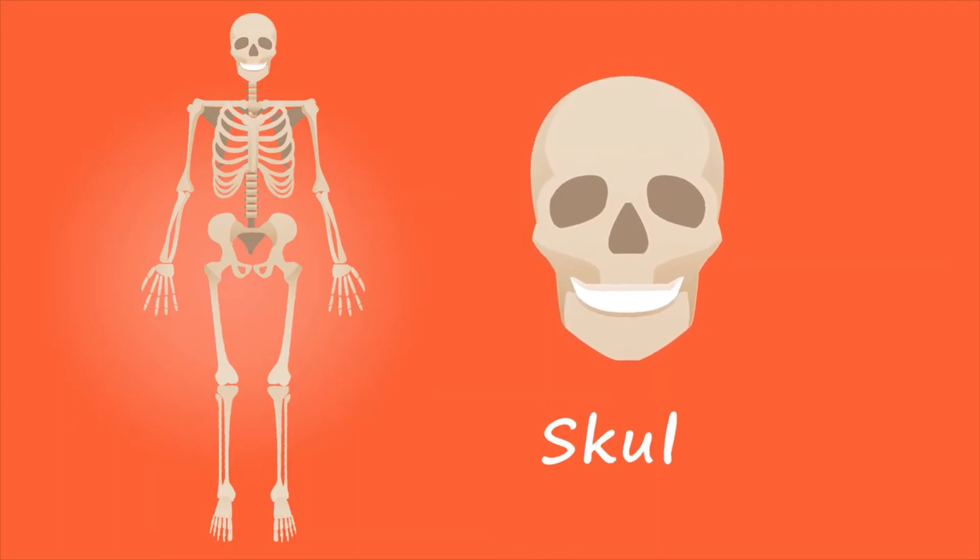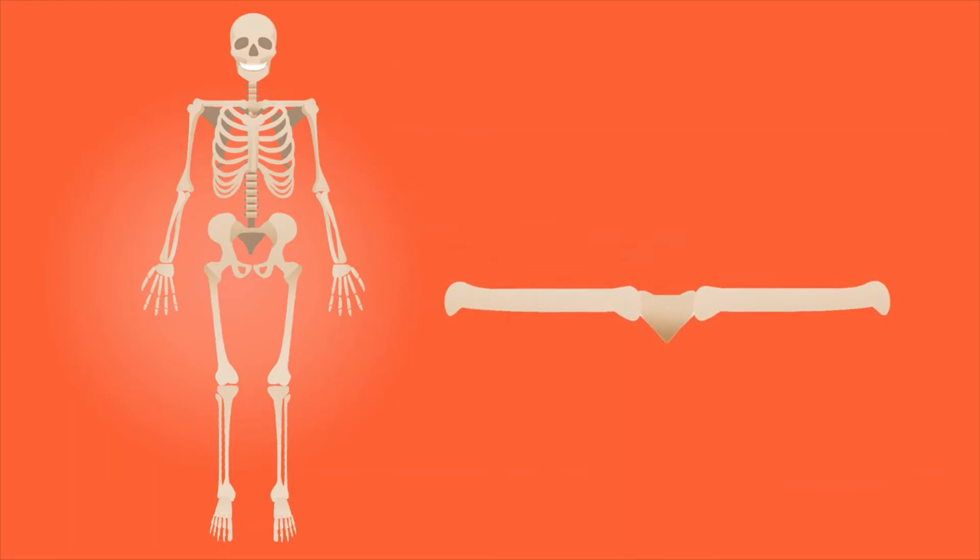The skull, which helps protect the human brain. Then there is the clavicle, or collarbone, which provides structural support between the shoulders and the rest of the skeleton.